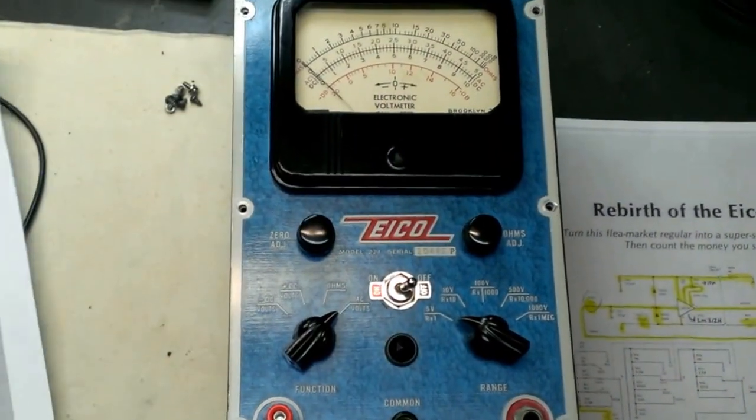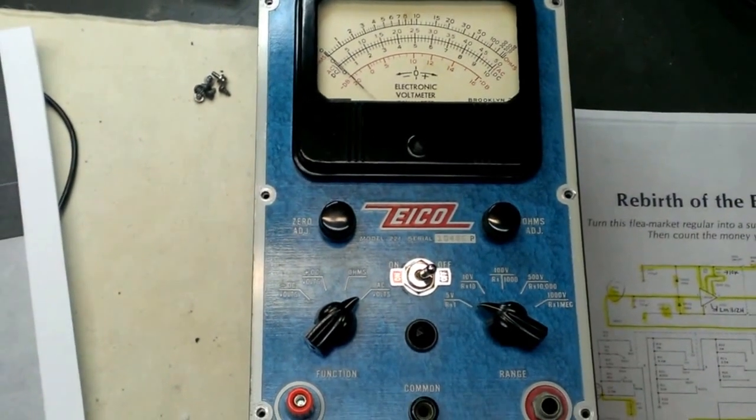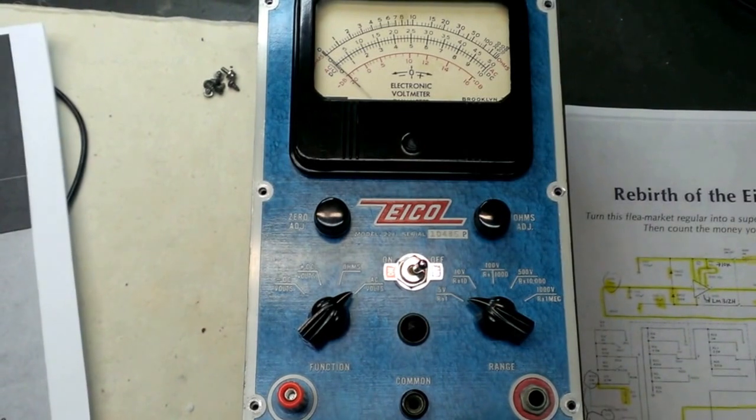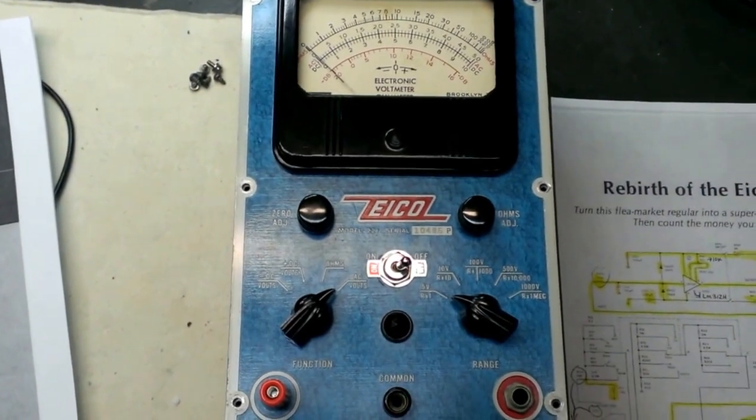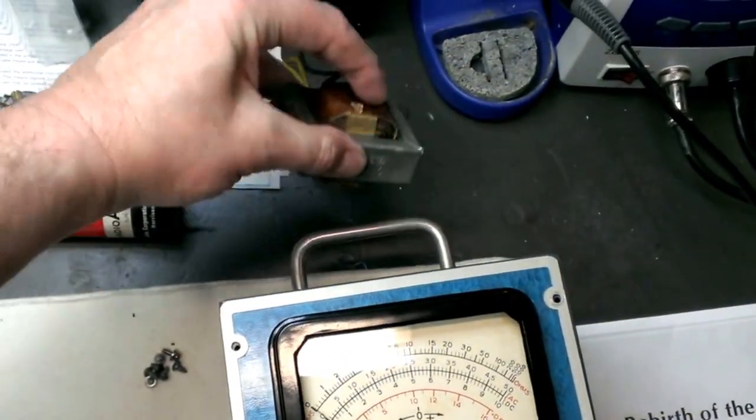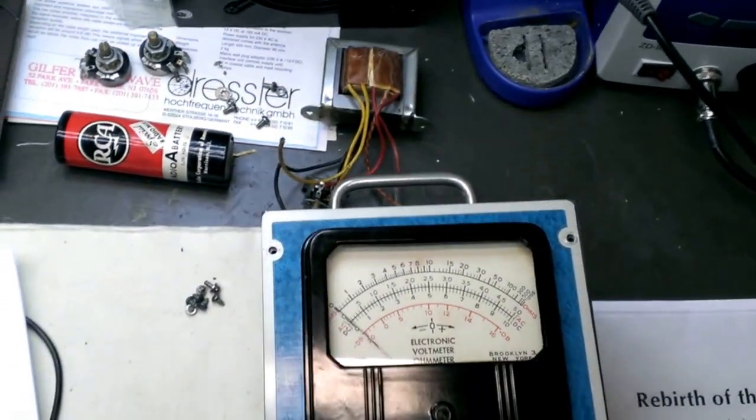This VTVM was given to me by a friend and needed some reconditioning. I'm not going to go into a lot of detail at this time, but when I started working on it to recondition it, I found that the power transformer, the secondary on the power transformer, was open.